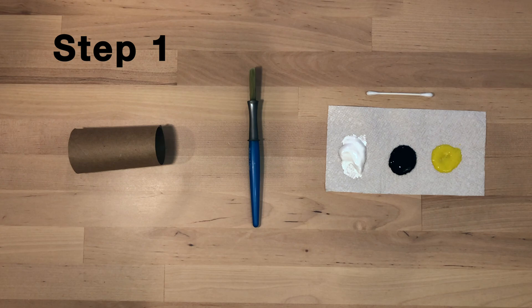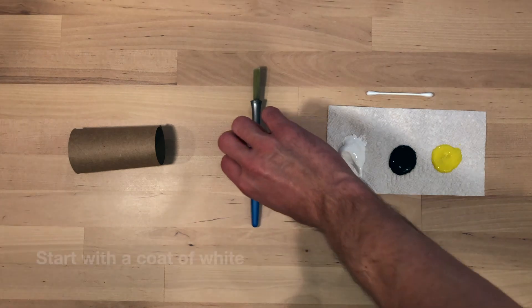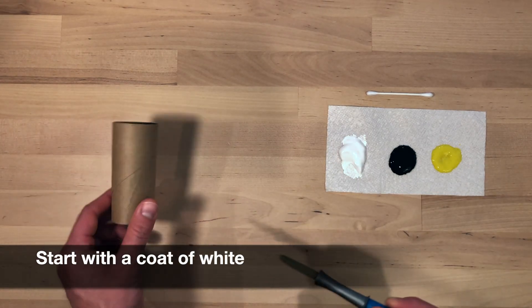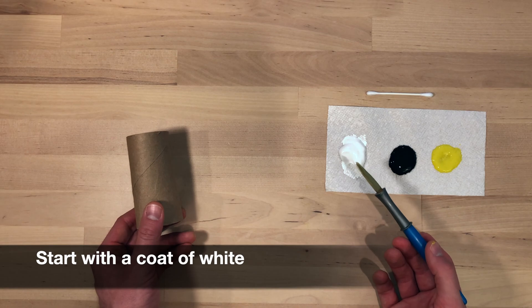Step 1. Let's do some decorating. I'm first going to paint my kazoo with a coat of white paint. This will help the next two colors pop.